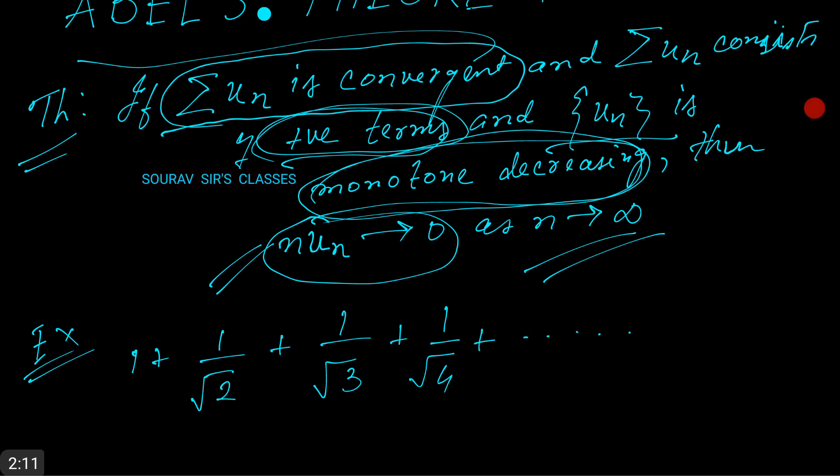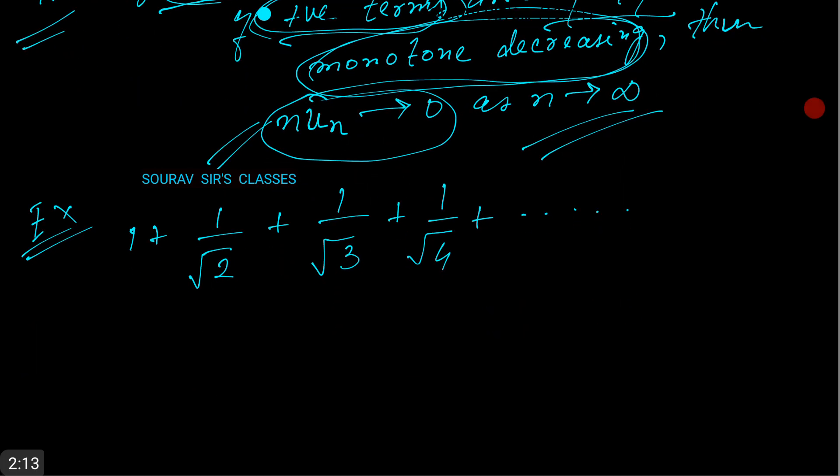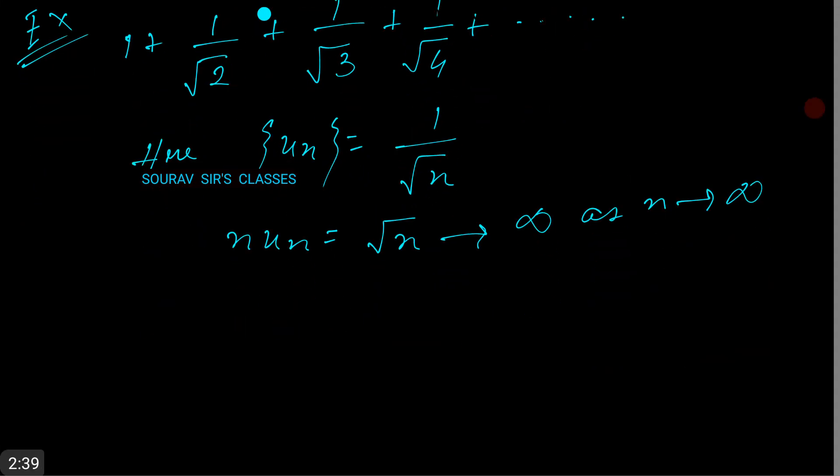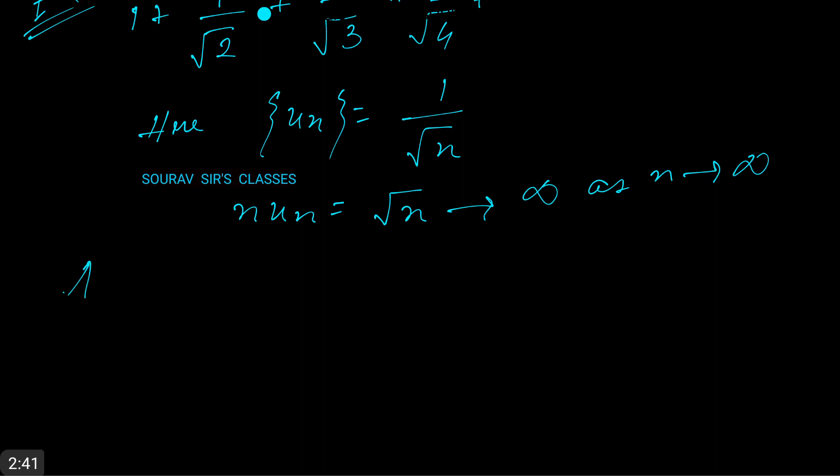So how do we test here? Sequence un equals 1/√n. n*un equals √n, since this is rationalized, which tends to infinity as n tends to infinity.